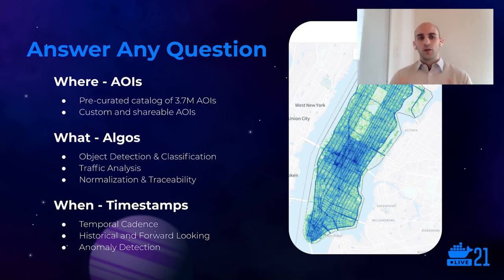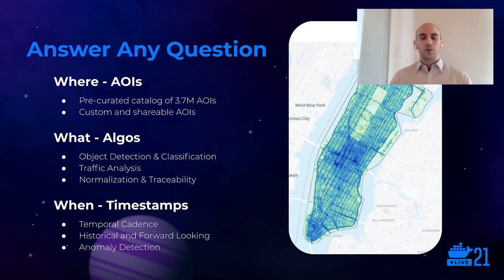So what does our platform do? Our platform allows you to answer any geospatial question, and we do this with three different inputs. First, where do you want to look? We do this with what we call an AOI, or area of interest — essentially a polygon drawn on a map. We have a curated dataset of almost 4 million AOIs you can search and use, but you're also free to build your own. Second, what do you want to look for? We have a suite of algorithms that automatically identify trucks, buildings, hundreds of different types of aircraft, different types of land use, and how many people are moving from one location to another.